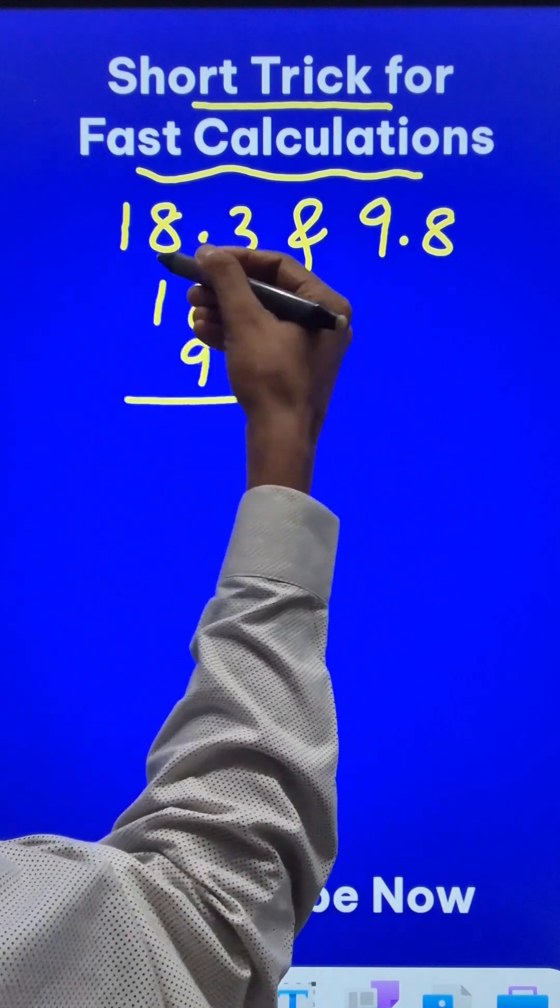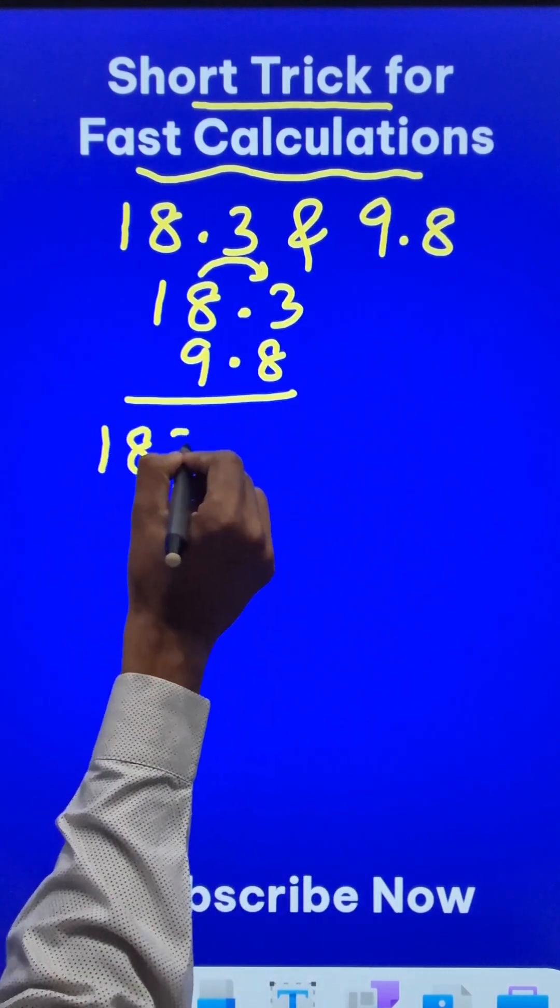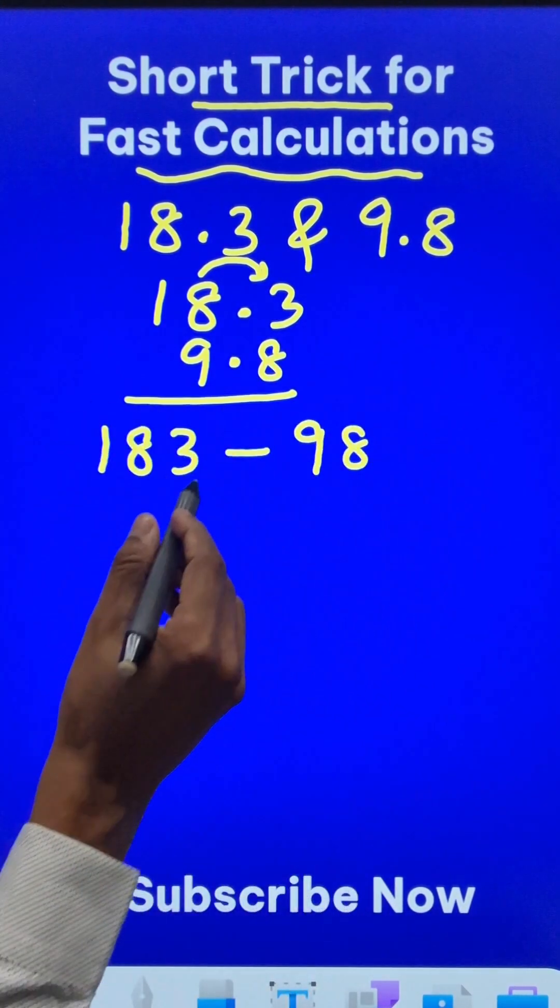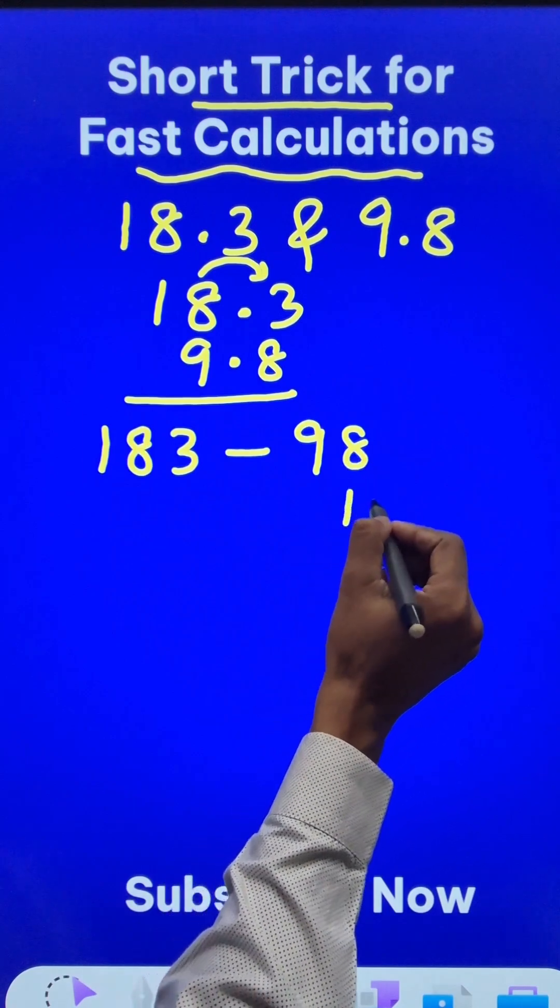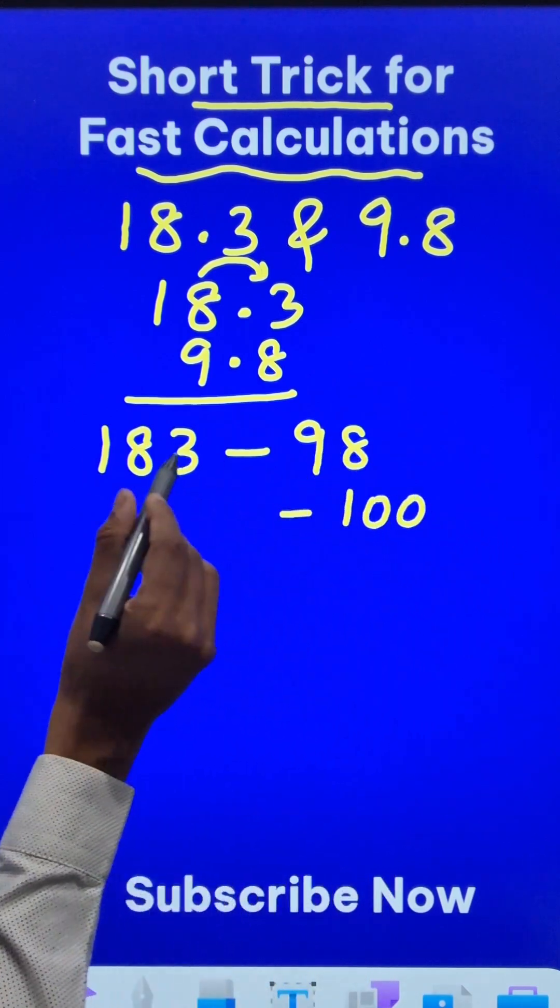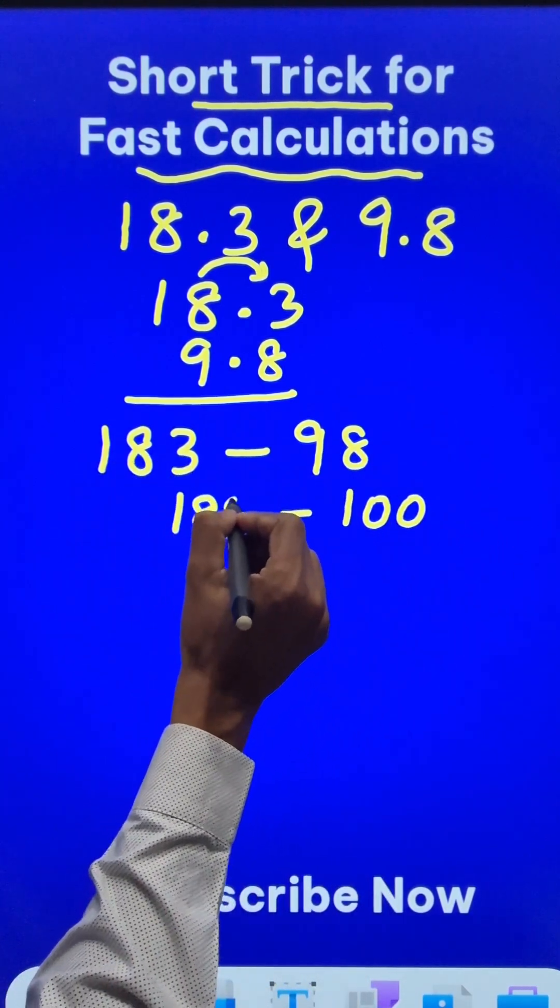So instead of that, let's get rid of the decimals first and think that the numbers are just 183 and we are subtracting 98 from this. In order to do so, this 98 is very close to 100. So I'll just increase this by 2 and I will increase 183 by 2 which gives me 185.